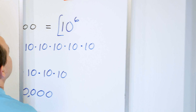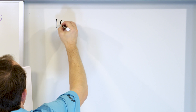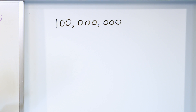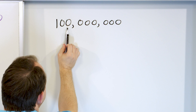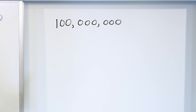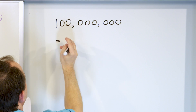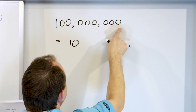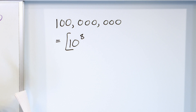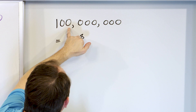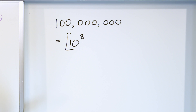Let's convert one hundred million to a power of ten. The number is 100,000,000. This is the millions place, ten millions place, and hundred millions place — so this is one hundred million. We write it as ten raised to the power of the number of zeros: one, two, three, four, five, six, seven, eight — ten to the power of eight. You can simply say it's ten raised to the power of how many zeros there are.